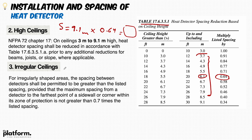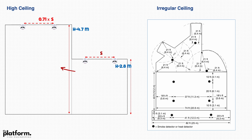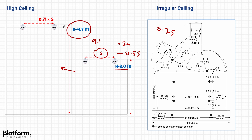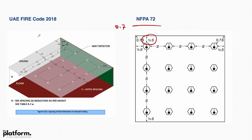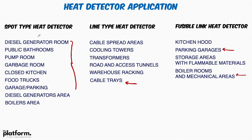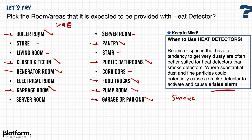For irregular ceilings, any point on the ceiling shall not exceed 0.7 of the listed spacing. In a room with standard height up to 3 meters, follow the standard listed spacing of 9.1 meters and apply 0.5 times the spacing from the wall. If the height is more than the standard 3 meters — for example up to 4.7 meters — refer back to the table and multiply the listed spacing by the appropriate reduction factor. We have covered heat detector types, spacing between detectors, and applications in auxiliary and special rooms. Stay tuned for the next lectures by the Platform of Fire Engineering. Thank you so much.